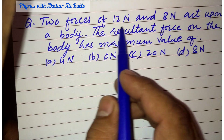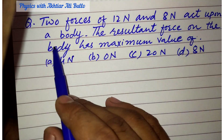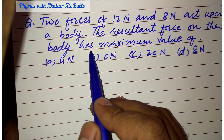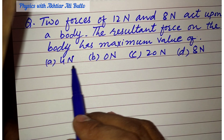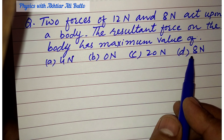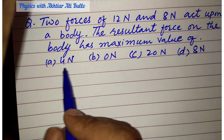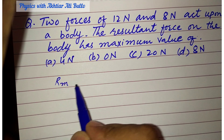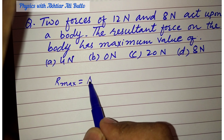Two forces of 12 Newton and 8 Newton act upon a body. The resultant force on the body has maximum value of: A) 4 Newton, B) 0 Newton, C) 20 Newton, D) 8 Newton.